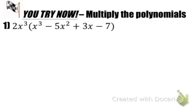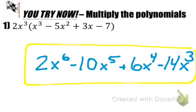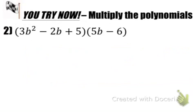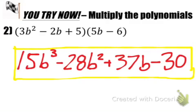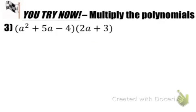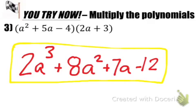Pause the video, try this one on your own, and then unpause it to see how you did. Pause the video here and check out how you would do the second try-now. Last but not least, try multiplying out these two polynomials. Were you 3 for 3, 1 for 3, or 2 for 3? That is the bell — make sure you write down if you did well or did not understand, and I can help you out the next day. See you next time.